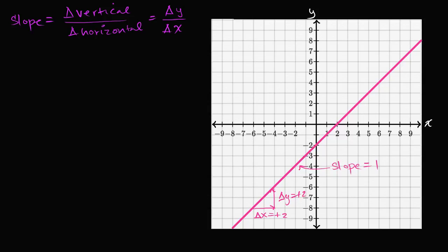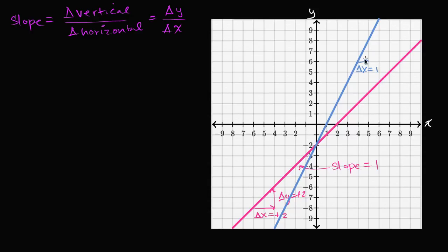But what would a slope of two look like? A slope of two should be steeper. For every one that I increase in the x direction, I'm going to increase two in the y direction. So it's going to look like that. If my change in x is one and my change in y is two, then change in y over change in x is two over one — the slope here is two.